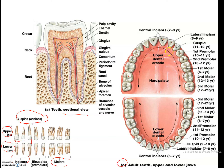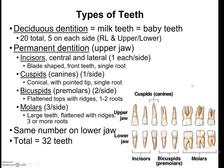Each of these teeth comes in at different times — for example, permanent central incisors come in at about seven to eight years old. Children have 20 baby teeth called deciduous dentition, basically 5 on each side. The permanent dentition are your adult teeth — on the upper jaw you have incisors, cuspids, bicuspids, and molars, the same number on the lower jaw, giving you a total of 32 teeth.